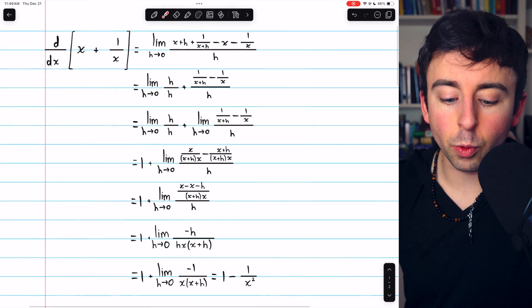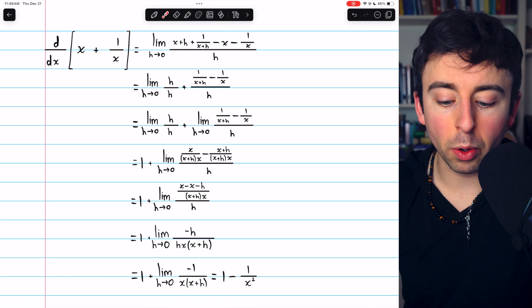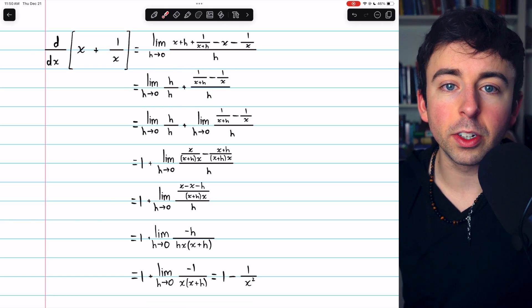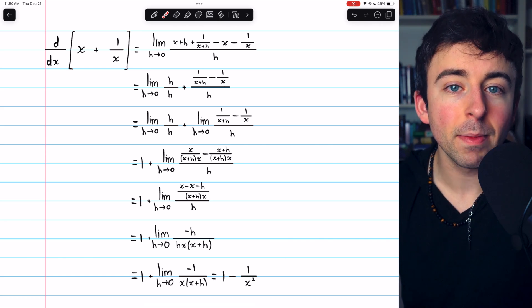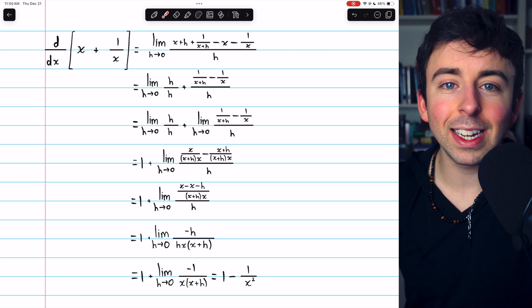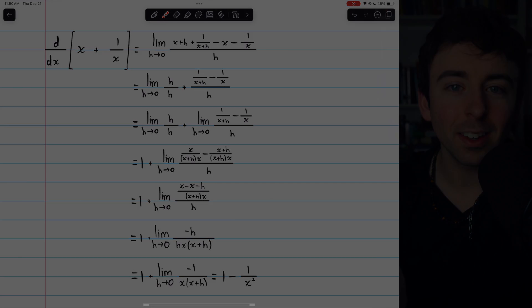And that's how you find the derivative of x plus 1 over x using the limit definition. We broke the limit up into smaller pieces, and then we just used some common denominators so that we could combine fractions and simplify. Let me know in the comments if you have any questions, and be sure to check out my Calculus 1 course and Calculus 1 exercises playlists in the description for more. Thanks for watching.